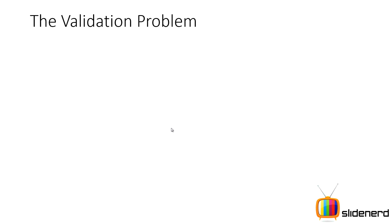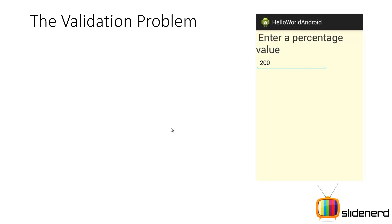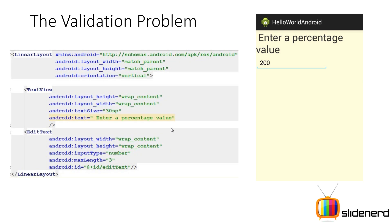Before we discuss anything, let me show you a small problem. You have an app where you ask the user to enter a percentage value and he enters 200. Do you think this is acceptable? Of course not. Here if you notice, I have a TextView and an EditText and I am using android:inputType equals to number to ensure the user can only enter numbers, and android:maxLength equals to 3 to ensure the user cannot enter more than 3 characters.